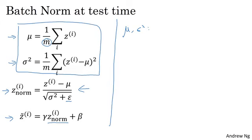And in typical implementations of batch norm, what you do is estimate this using an exponentially weighted average, where the average is across the mini-batches.